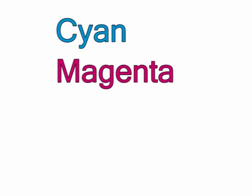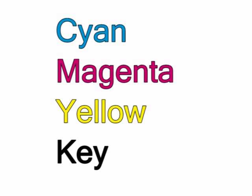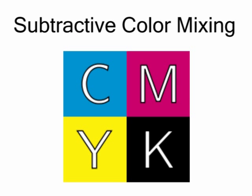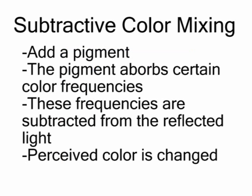Cyan, magenta, yellow, and key. Remember, CMYK is a subtractive color mixing system, which means that it is based on the fact that adding pigments to an object, such as a piece of paper, changes color by subtracting from the frequencies of light reflected by the object.